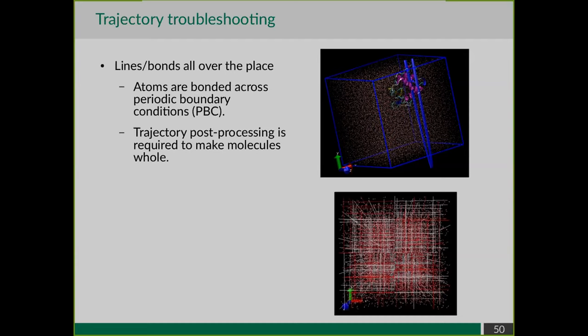This problem can be pretty mild, but in bad situations it's much worse. For example, in a typical GROMACS water box simulation, water molecules at the box edges are separated - some atoms inside and some that have exited and re-entered through the other sides. You get lines extending perpendicularly all across the box, and it really looks like a mess. The only way to fix this is post-processing of the trajectory.